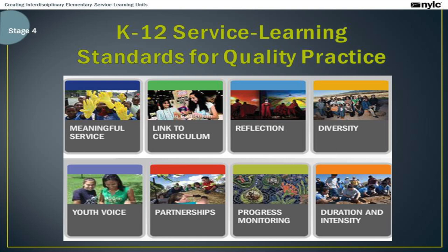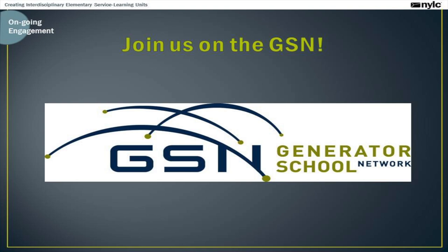The last stage of this process is the self-assessment, where you're asked to evaluate the unit based on the K-12 service learning standards for quality practice, as well as the academic and civic standards of the unit. If you're interested in learning more about the standards, you can find information at lyft.nylc.org. If you're interested in continuing the discussion on how to create interdisciplinary units, sharing plans with other teachers, or having a forum for questions about your service learning projects, feel free to join us on the interdisciplinary elementary unit group on the GSN. A link is being sent through so you can sign up — the group is free and open to the public, so feel free to pass it on to others in your schools or systems.